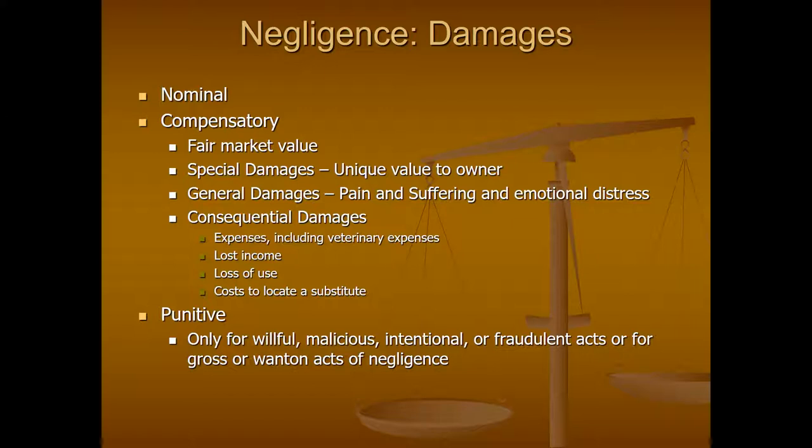Compensatory damages are designed to compensate the person who is injured in a fair way for their injuries. One way to compensate someone for loss of an animal is the fair market value of the animal. The difficulty with that is for most small animals like dogs and cats, the fair market value is a relatively small number compared to the emotional value of that animal. In some cases there is a claim for special damages where the animal has a unique value to the owner — for example, if the animal is a service animal or a seeing-eye dog, that may warrant an award of special damages.